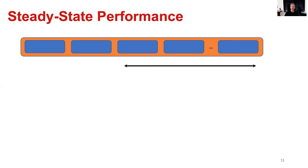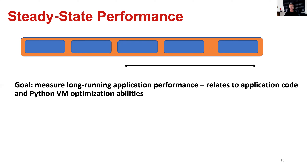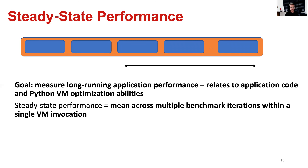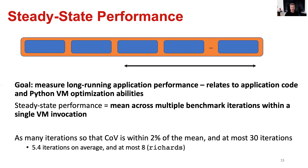For steady state performance, we consider a single VM invocation with multiple benchmark executions. The goal is to measure long-running application performance, relating to application code and the Python VM's optimization capabilities. Steady state performance is measured as the mean across multiple benchmark iterations within a single VM invocation — as many iterations as needed so that the coefficient of variation is within 2% of the mean, with at most 30 iterations. On average, 5.4 iterations is sufficient, with up to 8 for a single benchmark.